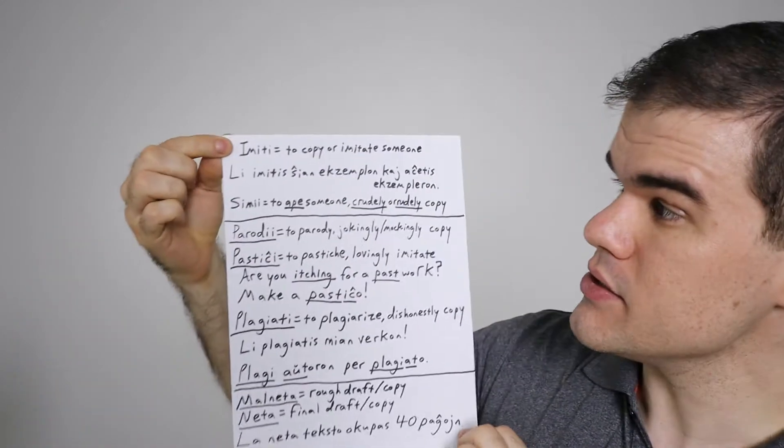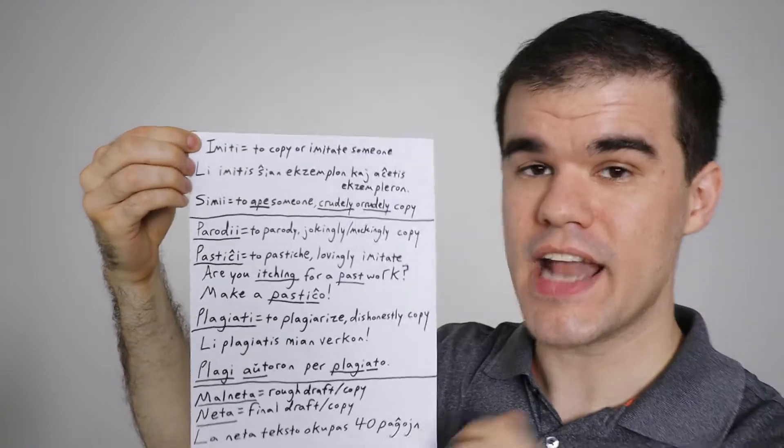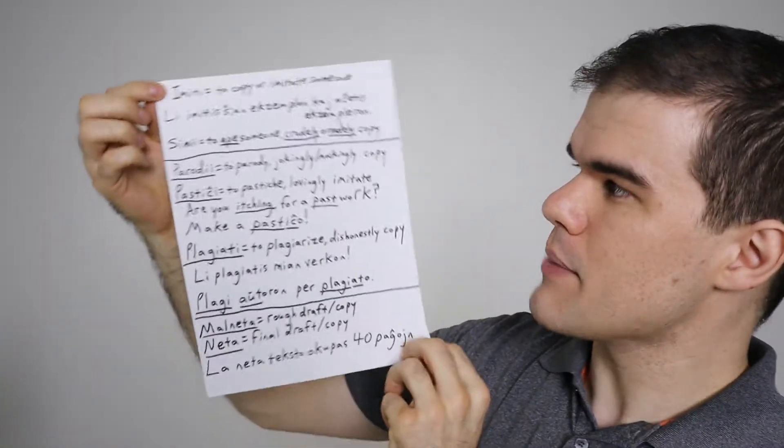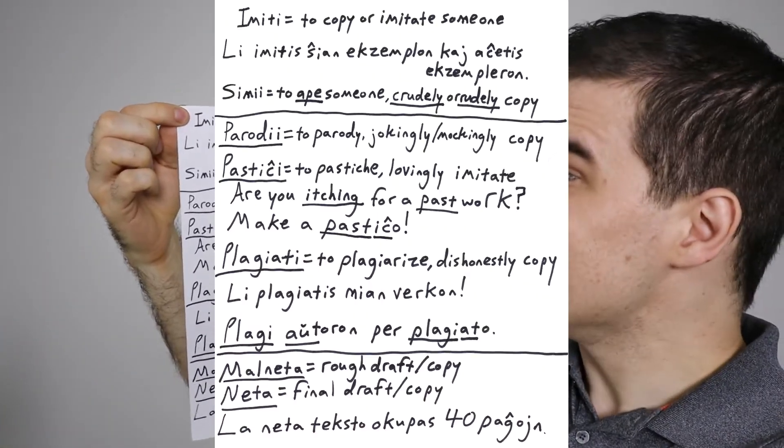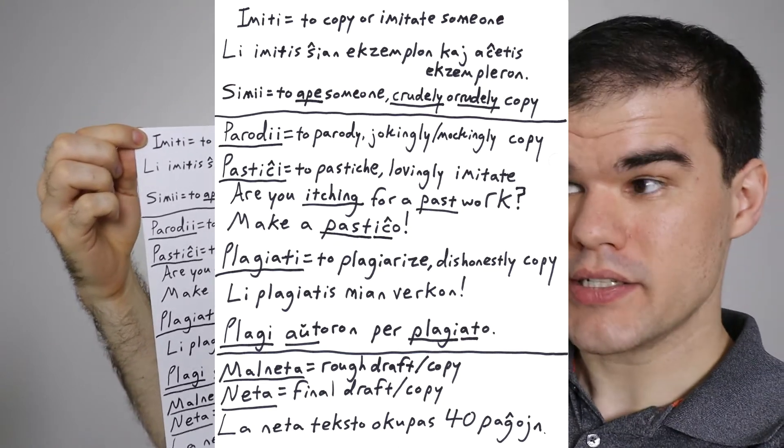So those are some copies. Now let's look at another way to copy something, sort of the act of copying or imitating something. What's the word? It is imiti. That's to copy or imitate someone. Now, we don't use imitate that often. If I said, hey, I'm going to do a little dance, then you copy me. You'd probably say copy me. You wouldn't say, you imitate me then. You wouldn't say that. But in Esperanto, that should be your go-to word is imiti. So imitumin. Copy me. He imitated her example and bought a copy of the book.